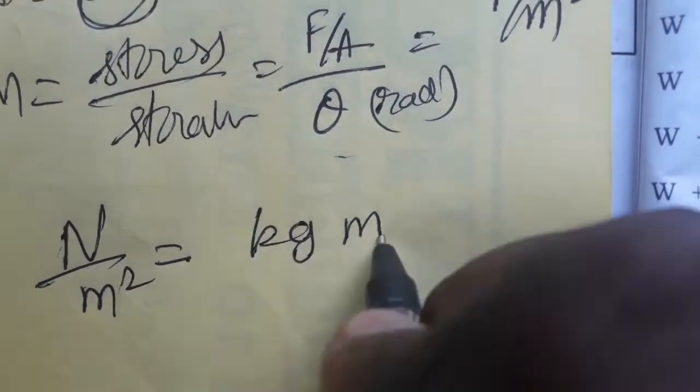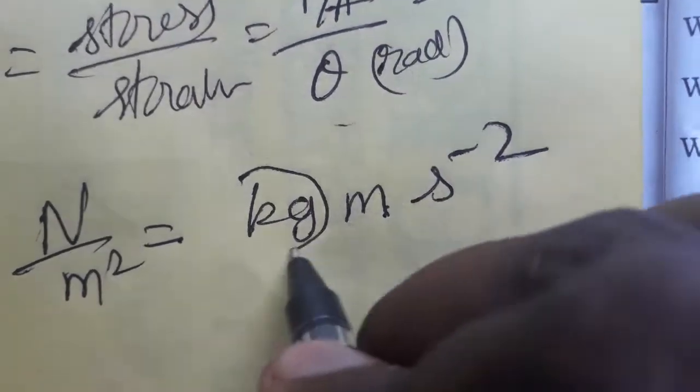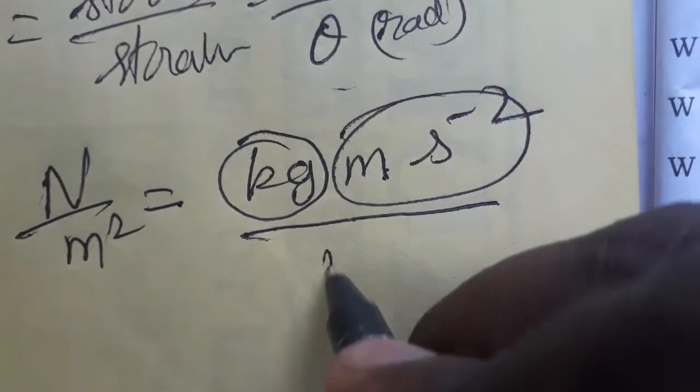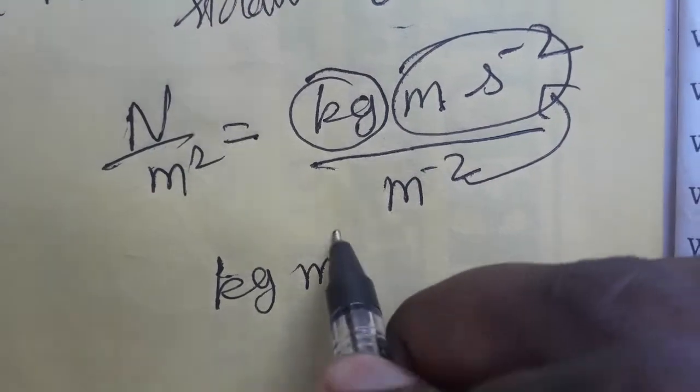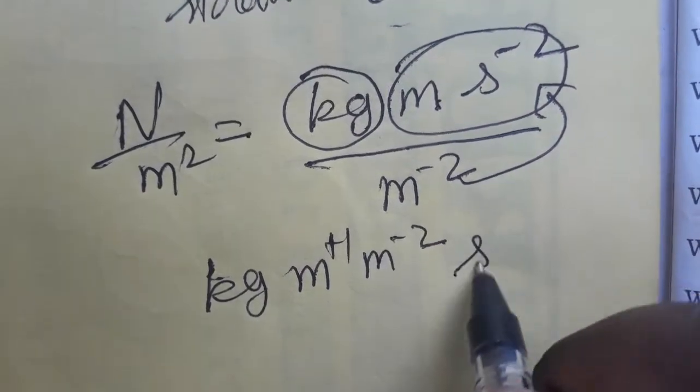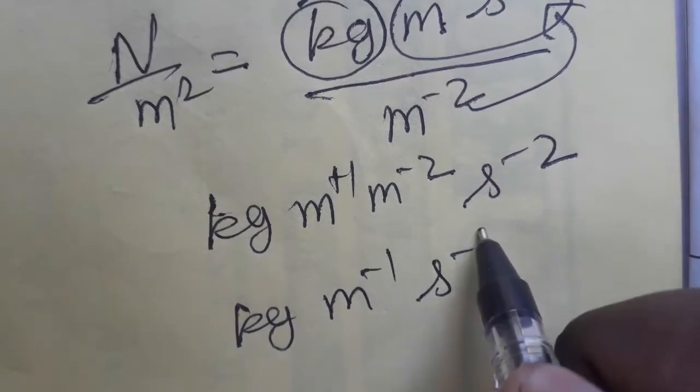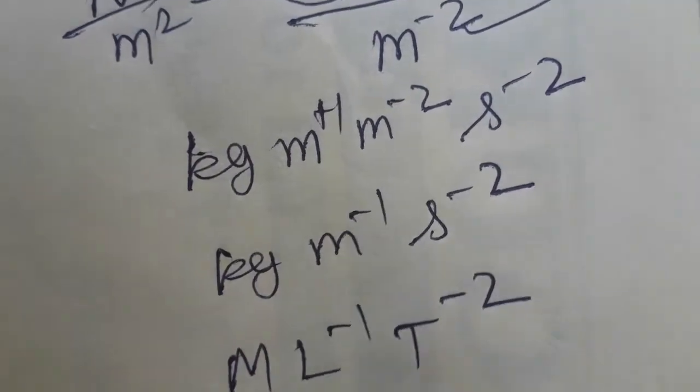Force SI unit is mass into acceleration. Mass is kg, acceleration is meter second minus 2, divided by meter square. Taking meter square from denominator to numerator: kg meter plus 1 minus 2, which is meter minus 1, second minus 2.